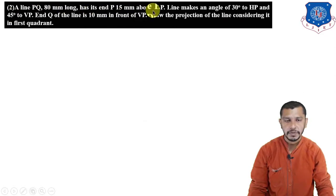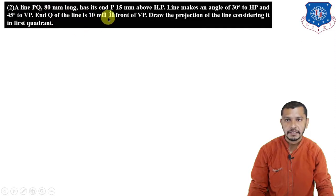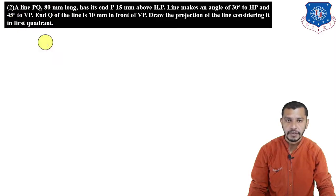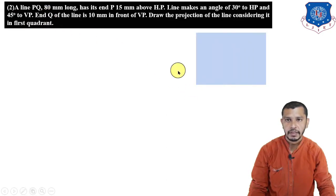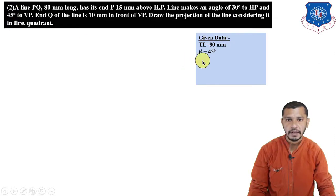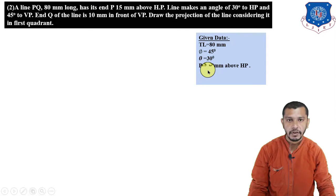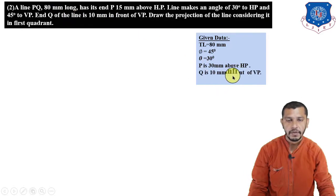Now let's move to the next example. A line PQ, 80 mm long, has its end P 15 mm above HP. The line makes an angle of 30 degrees to the horizontal plane and 45 degrees to the vertical plane, and Q is 10 mm in front of VP. Draw the projection of the line considering it in the first quadrant. Since the line is in the first quadrant, both P and Q are above HP and in front of VP. Given data: true length = 80 mm, φ = 45 degrees, θ = 30 degrees, P is 15 mm above HP, and Q is 10 mm in front of VP. We only need to draw the projections.